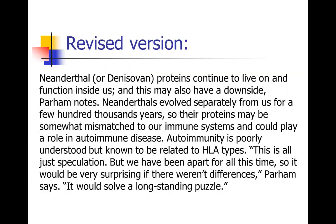Here's my revised version — this may have gone through one or even two passes. 'Neanderthal or Denisovan proteins continue to live on and function inside us, and this may also have a downside. Neanderthals evolved separately from us for a few hundred thousand years, so their proteins may be somewhat mismatched to our immune system and could play a role in autoimmune disease. Autoimmunity is poorly understood, but known to be related to HLA types.' And then we get the quote. Notice that second paragraph has all the same ideas but is much more succinct, clear, and elegant than the first. But it didn't start that way — it evolved into that through revision.